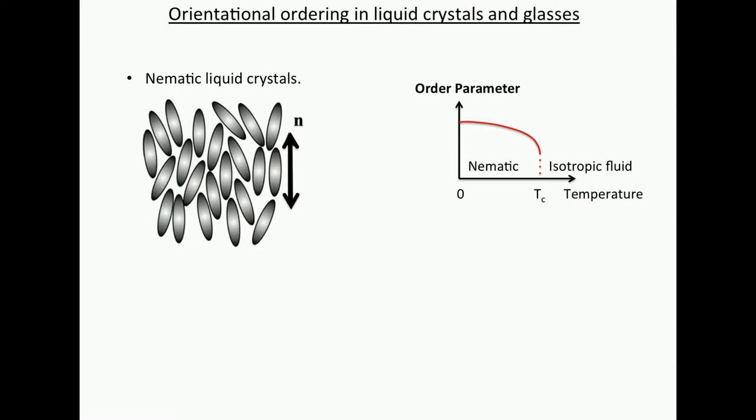So from the viewpoint of phase transitions, for what's called a thermotropic liquid crystal, as a function of temperature, you go from an isotropic phase to this nematic phase. So the order parameter makes a small jump. You call it the first order phase transition associated with a discontinuous jump.